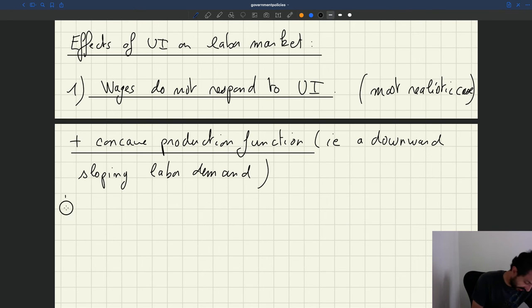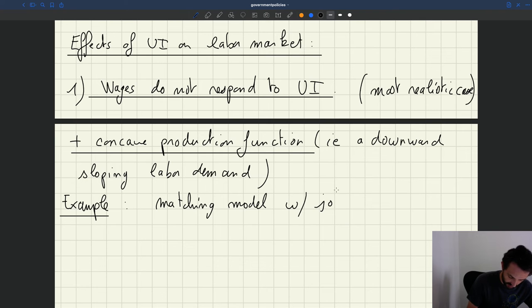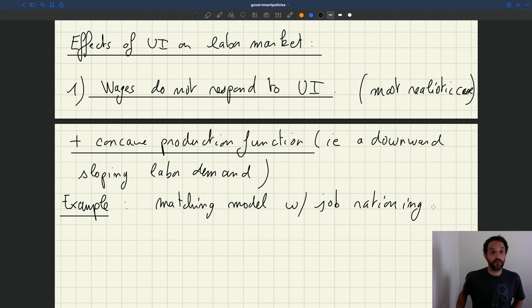So an example here of such a model would be the matching model with job rationing. Okay, so let's start with that. What happens in that model?